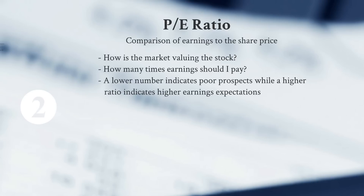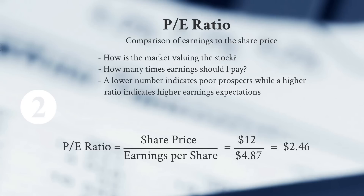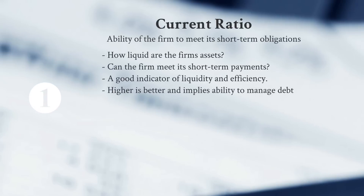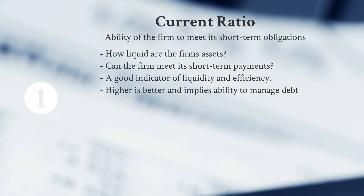The P/E ratio is calculated by taking the market share price and dividing by earnings per share. In this case, a $12 share price divided by $4.87 earnings per share gives a P/E ratio of 2.46, which would not be very strong.